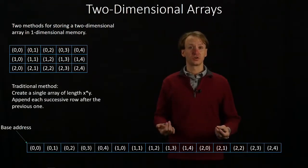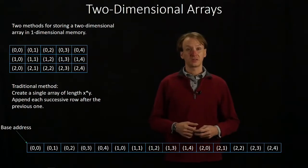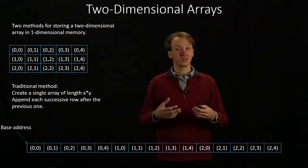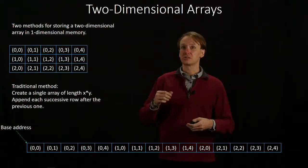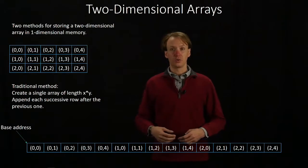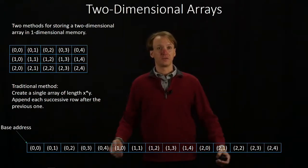The first is the traditional method. Basically, we're just going to build one big long array that has enough space for all of our elements. So here I've got 15 elements in this table, so I will generate an array of 15 elements in it.